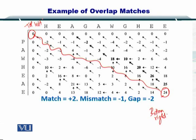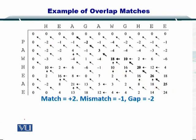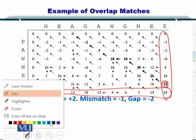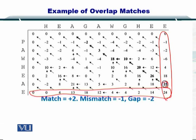However, to find overlap matches, you do not need to do that. In the overlap matching, you need to find the maximum value in the last column as well as the last row. So as you can see here, the highest value is 25 here.